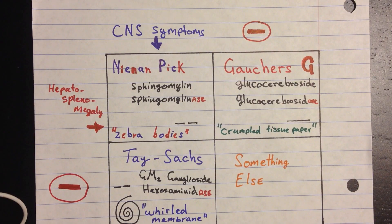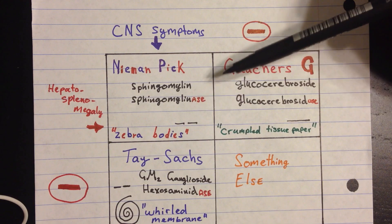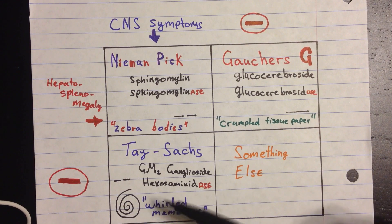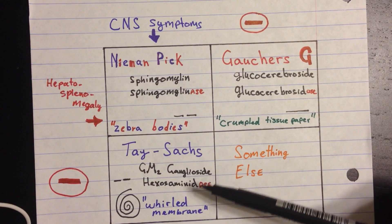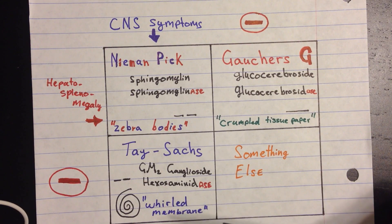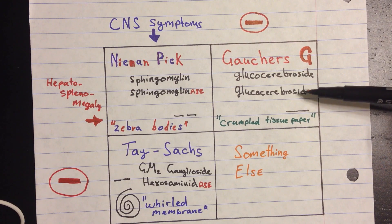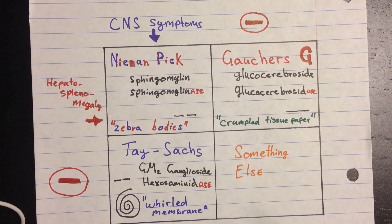Now, you have two regular diseases and one disease that's loopy and weird. We're going to begin with the weird one because those are easier to remember. Tay-Sachs is loopy because it has whorl membranes, and it's also the only one where the enzyme doesn't match the substrate it works on. You have sphingomyelin with sphingomyelinase, and glucocerebroside with glucocerebrosidase — but here you have GM2 ganglioside and hexosaminidase. It doesn't match.